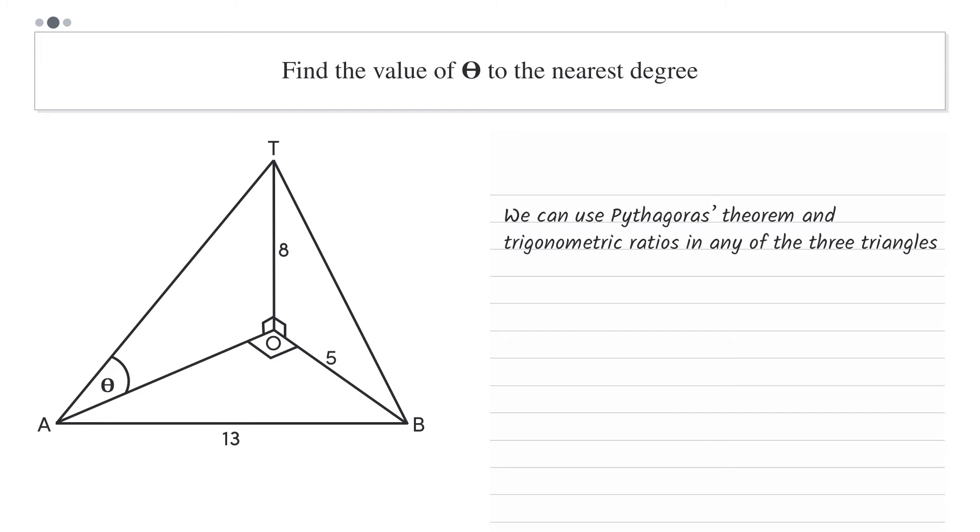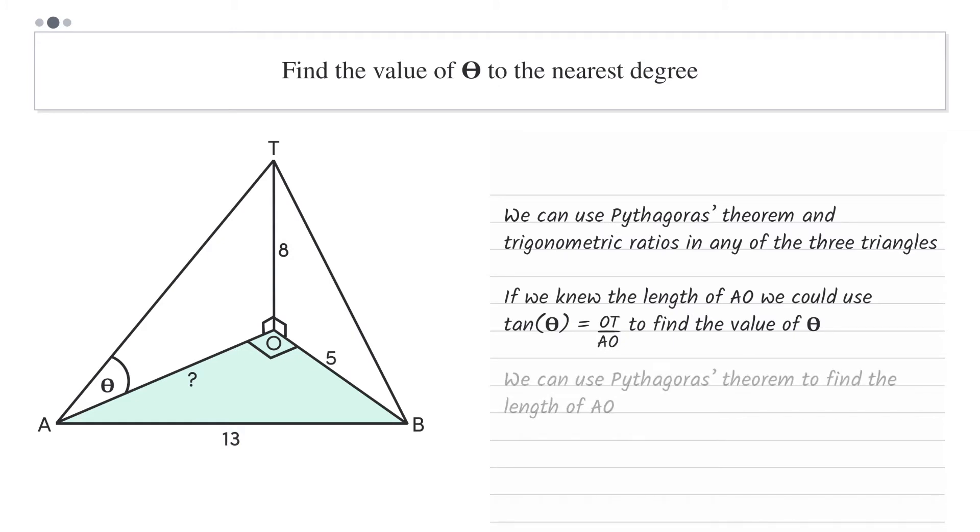We want to find theta, which is in this triangle here. If we know the length of AO, then we could use tan theta equals opposite over adjacent to find theta. So how are we going to find the length of AO? Well, in this base triangle we have two of the other side lengths. That means that we can use Pythagoras' theorem to find AO. Great, let's get started on that.